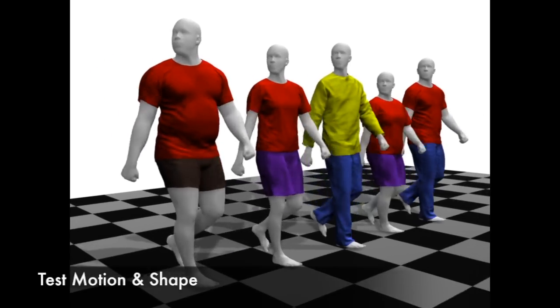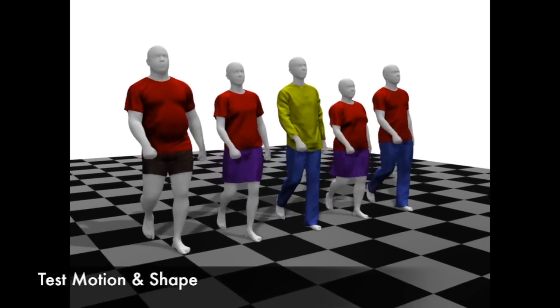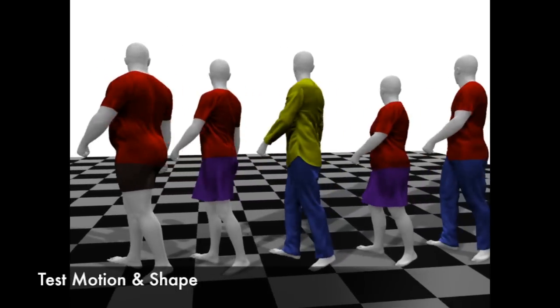For virtual try-on, drape allows any body shape to be automatically dressed and animated to show how a garment will look.